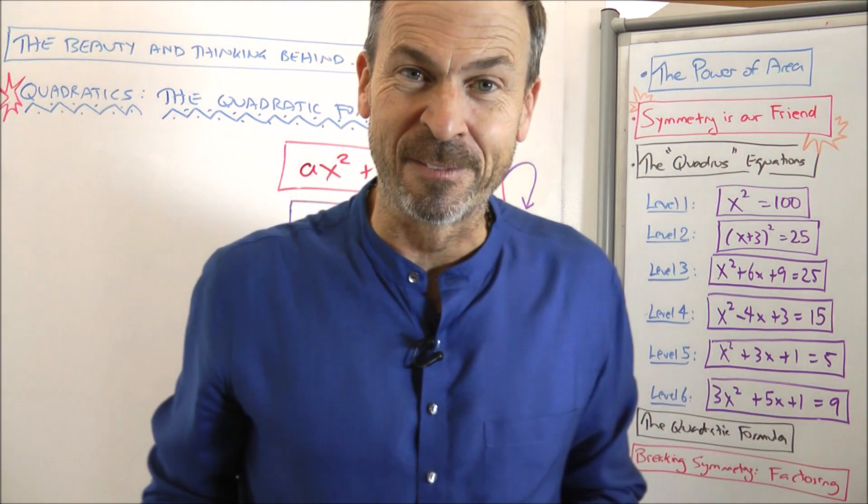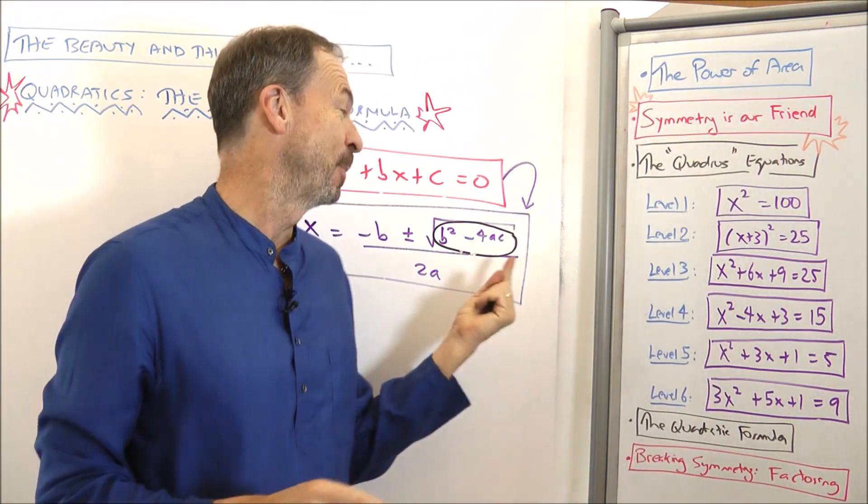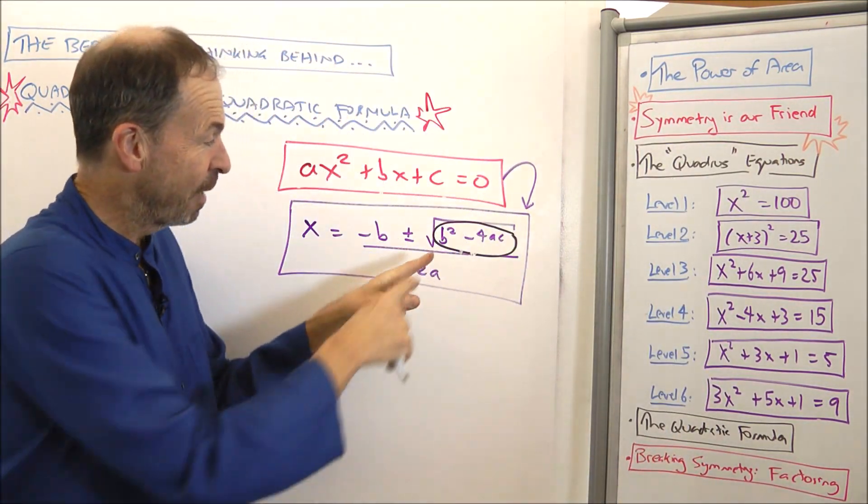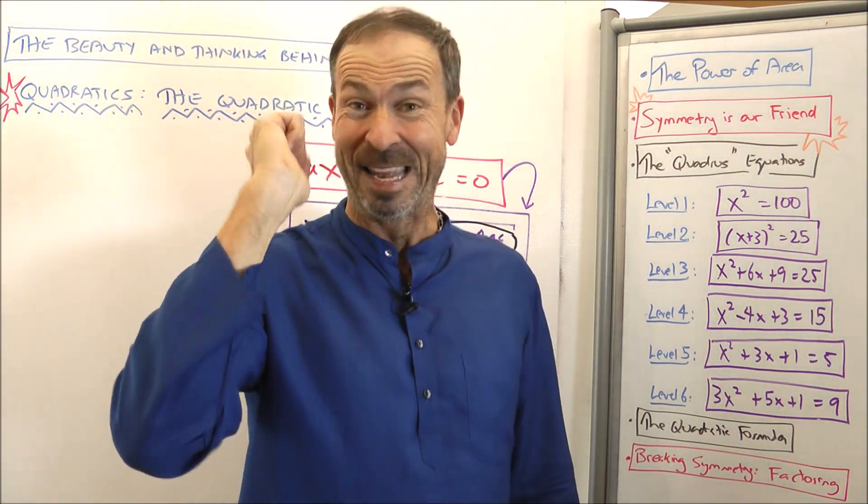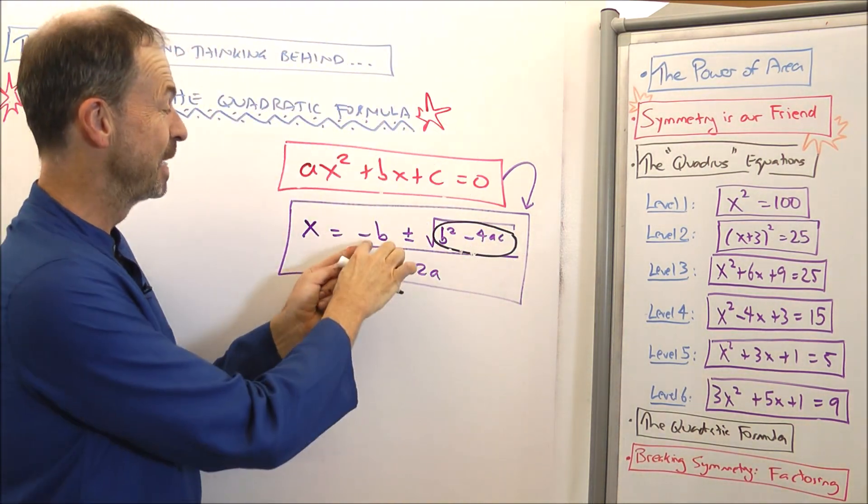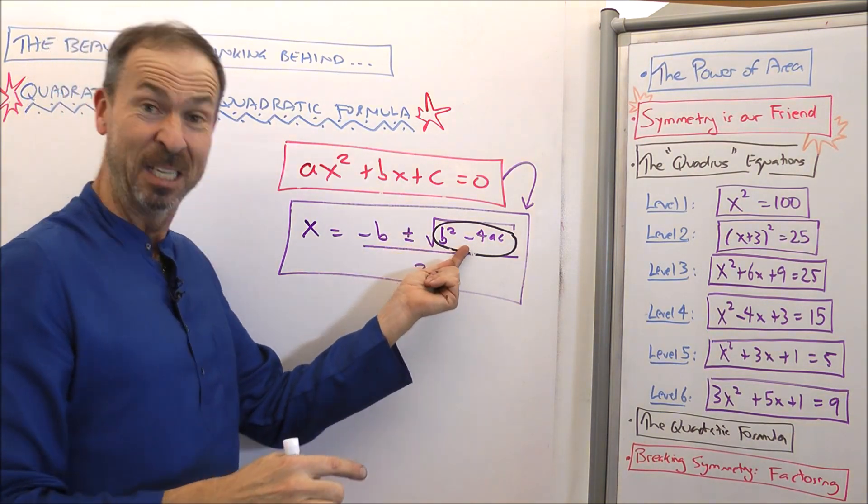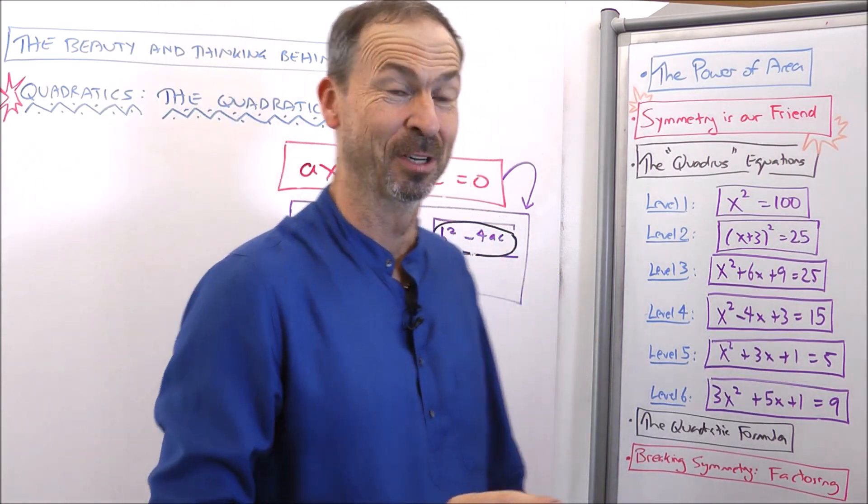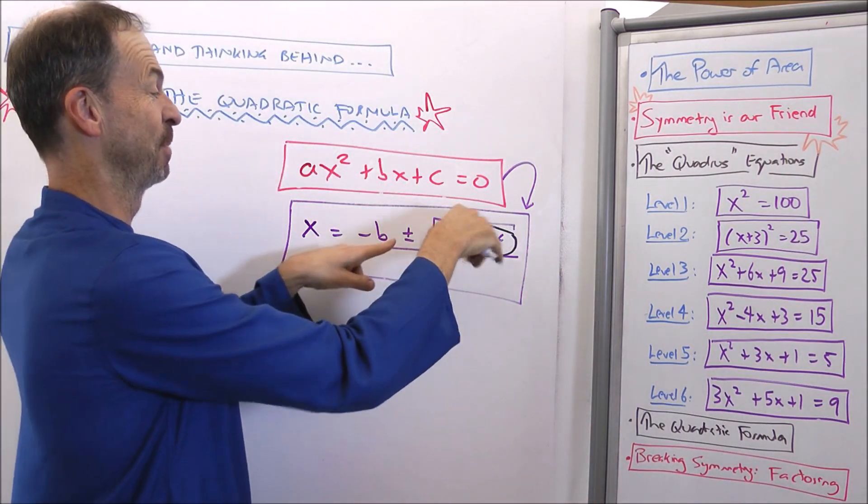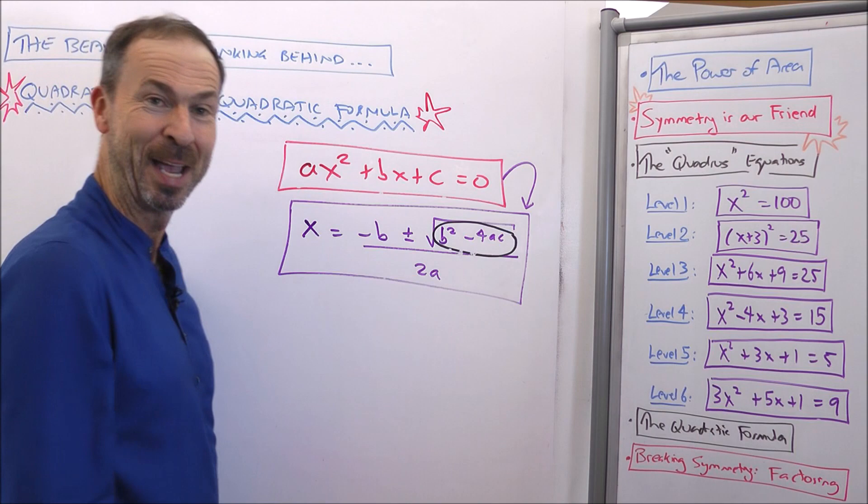If b squared minus 4ac turns out to be zero on the nose, just by luck, then actually you'll have negative b plus or minus the square root of zero, but there's only one square root of zero, namely zero. And you'll only have one solution, namely negative b plus or minus nothing, ignore that, over 2a.